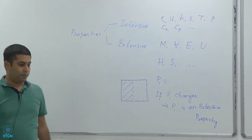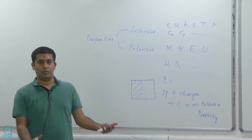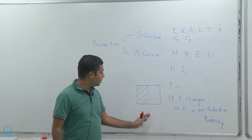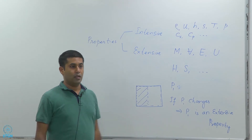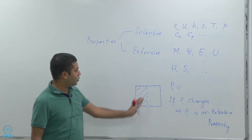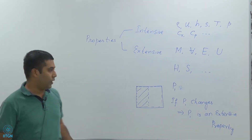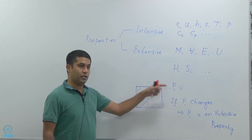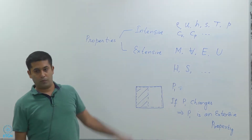For example, let us say we had 10 liters of oxygen at room temperature and pressure. The temperature everywhere is the same, and when I divide the system the temperature at each point still remains the same — therefore temperature is an intensive property. Whereas the total mass changes when I divide the system: if I divide it into two equal halves, the mass on each side will be m/2, where m is the mass of the total system. So mass is an extensive property.